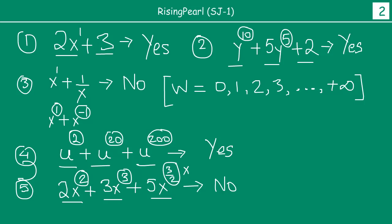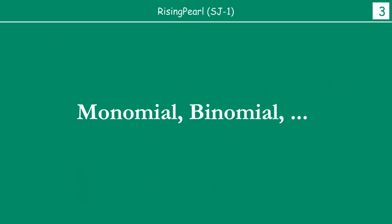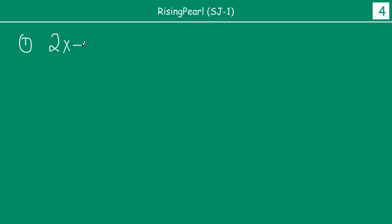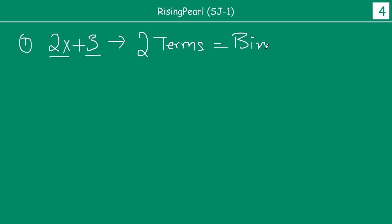Now let us look at the second thing we want to discuss today which is monomials, binomials, etc. So what are these? Let us take some examples. Let us take the first example we saw earlier — 2x plus 3. We saw this is a polynomial. Now yaha pe, how many terms are there? Well, we have the first term as 2x and second term is 3. So yaha pe we have 2 terms. Agar humare paas 2 terms hain, if we have 2 terms, usko hum bolte hain this is a binomial. Bi stands for 2. Because yaha pe there are 2 terms — 2x plus 3 — aapke paas 2 terms hain, iske liye we call it a binomial.